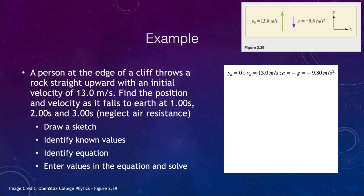We've drawn our sketch. What do we know? Well, we know the initial position is zero—we define that to be where we're starting. We know that the initial velocity is 13 meters per second, and we know that the acceleration is negative 9.8 meters per second squared. Then what are we trying to find? Well, let's start off at time one second. Let's find the position.